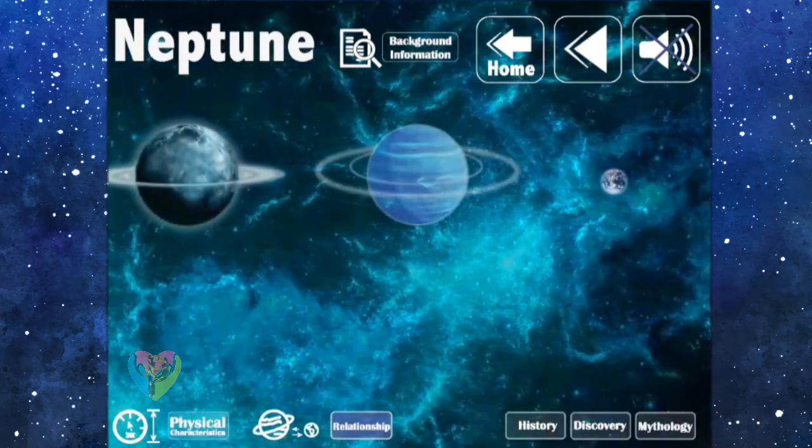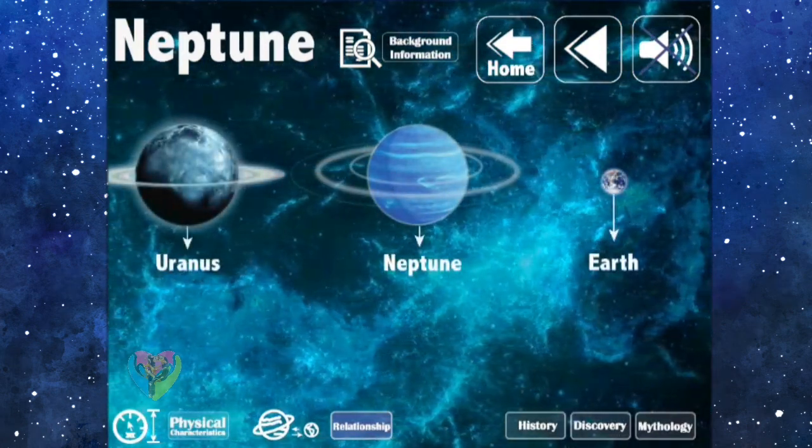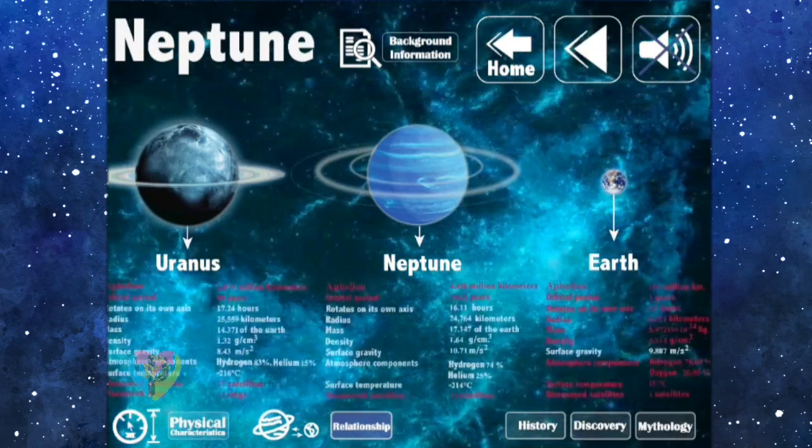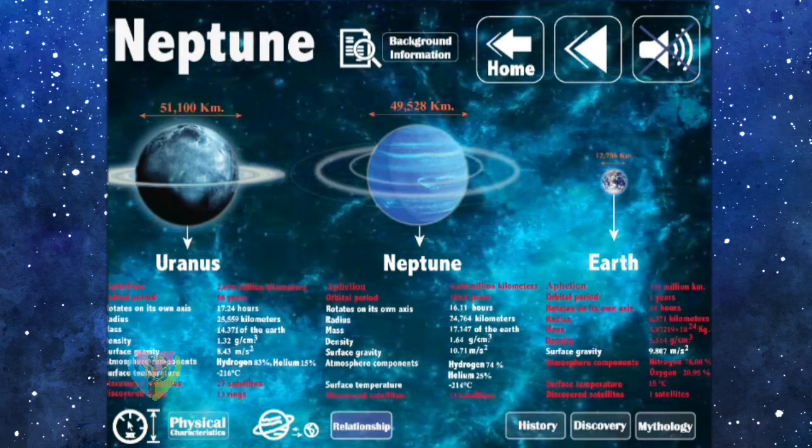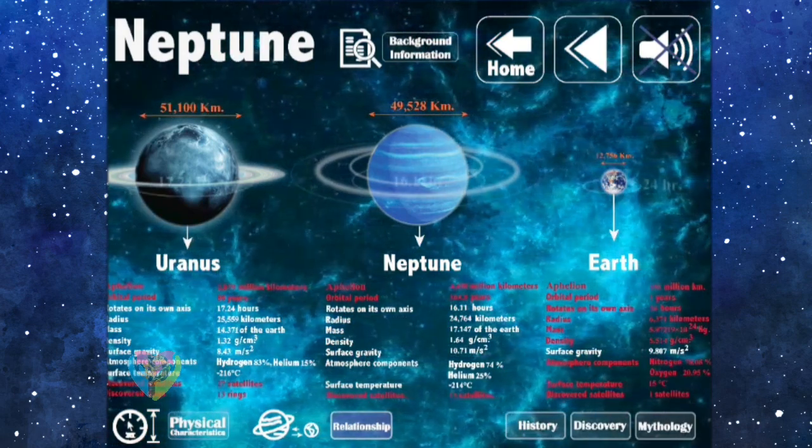To compare Neptune and Uranus, both planets have very similar physical characteristics, including the size, the main element of the atmosphere, the orbital period on its own axis,